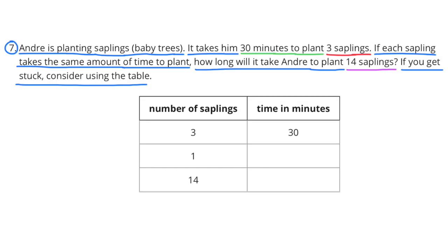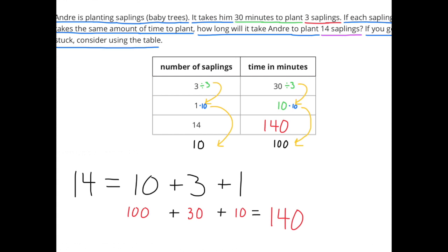Number 7: Andre is planting saplings — baby trees. It takes him 30 minutes to plant 3 saplings. If each sapling takes the same amount of time, how long will it take Andre to plant 14 saplings? We know 30 minutes divided by 3 equals 10 minutes, so he can plant 1 sapling in 10 minutes. 14 saplings is the same as 10 plus 3 plus 1 saplings, which takes 100 plus 30 plus 10 minutes. It would take him 140 minutes to plant 14 saplings.